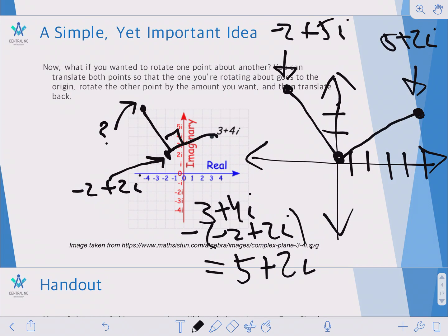And then, to get the point we want, we simply add back minus 2 plus 2i to get minus 2 plus 5i minus 2 plus 2i. So you get minus 4 plus 7i.